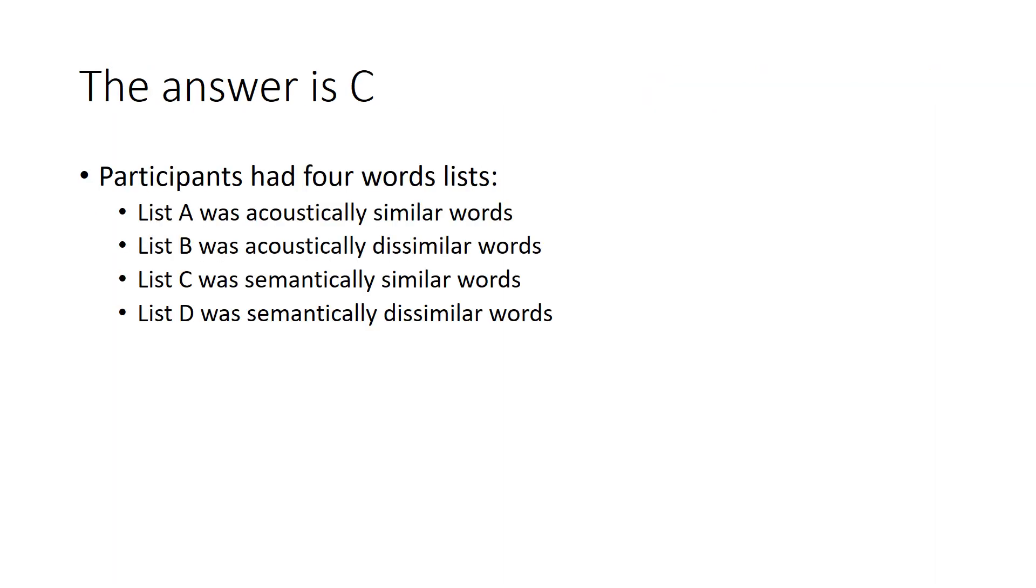The answer is C. Participants had four word lists. List A was acoustically similar words, list B was acoustically dissimilar words, list C was semantically similar words, and list D was semantically dissimilar words.